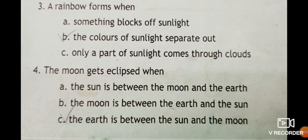The moon gets eclipsed when: the sun is between the moon and the earth, the moon is between the earth and the sun, the earth is between the sun and the moon. The correct option is the earth is between the sun and the moon.